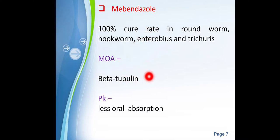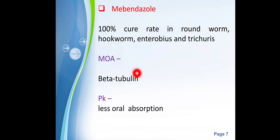The mechanism of action of mebendazole is that it inhibits beta-tubulin within the parasites, thereby inhibiting polymerization inside the parasite. It also blocks glucose uptake. Pharmacokinetically, an important point is that mebendazole has less oral absorption, but it is still used orally and can also be given parenterally.